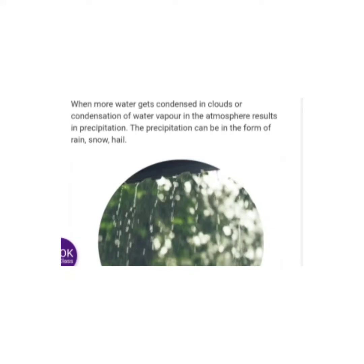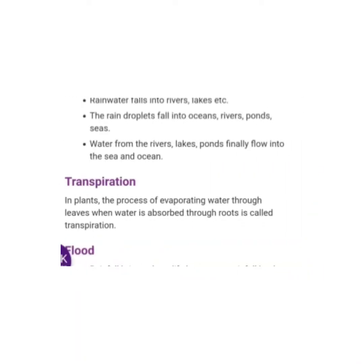Precipitation: when more water gets collected in clouds, it falls as rainfall. This usually leads to rainfall and snowfall in different areas as part of the water cycle. The flow of water then moves towards the ocean — rainwater falls into rivers, lakes, and so on.